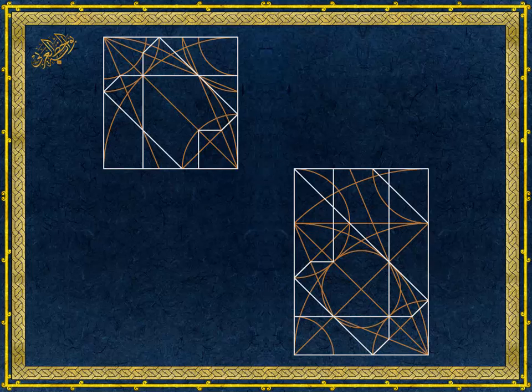But with a slight modification, we can rectify these patterns. Let's take the part that is inside a square first. If we extend this line, this shape will turn into a star.